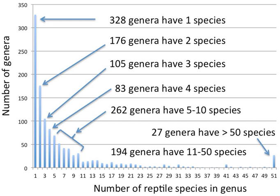The number of species in genera varies considerably among taxonomic groups. For instance, among reptiles, which have about 1,180 genera, the most have only one species, approximately 360 have between two and four species, 260 have 5 to 10 species, approximately 200 have 11 to 50 species, and only 27 genera have more than 50 species. However, some insect genera such as the bee genera Lasioglossum and Andrena have over 1,000 species each. The largest flowering plant genus, Astragalus, contains over 3,000 species. Which species are assigned to a genus is somewhat arbitrary.